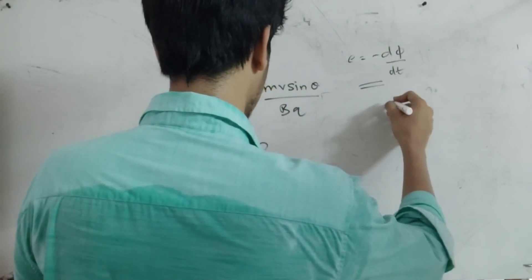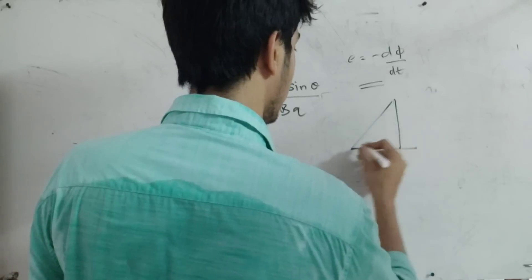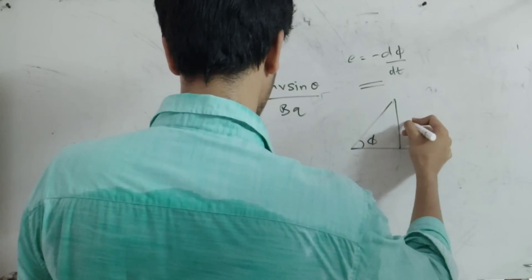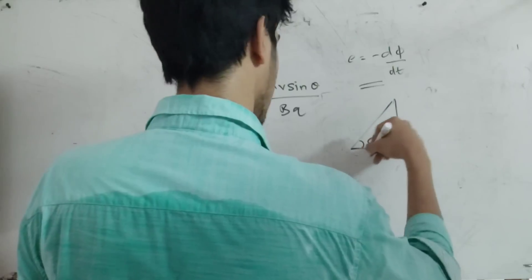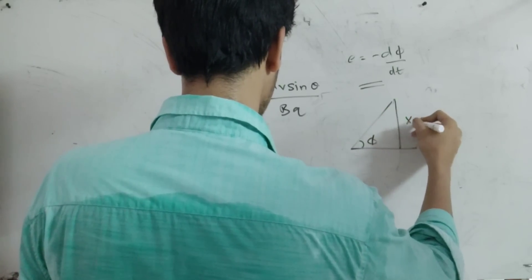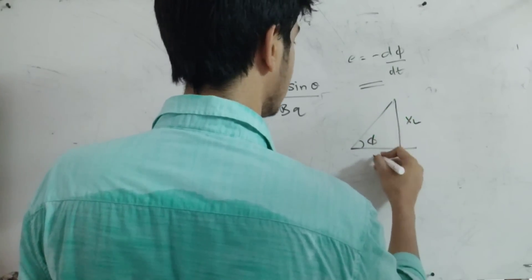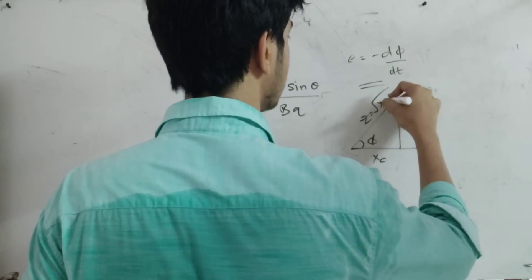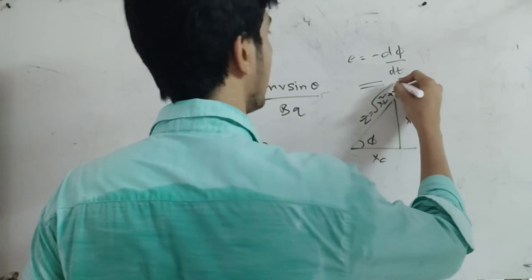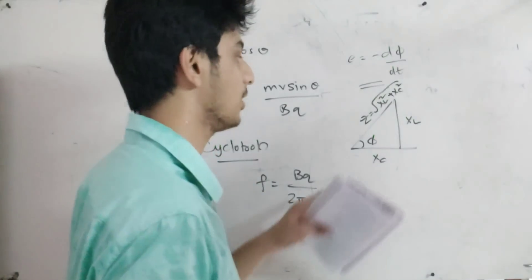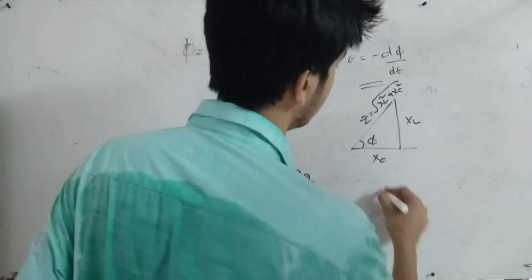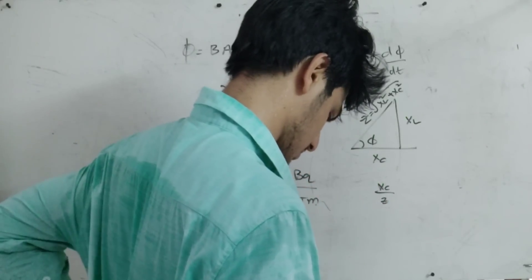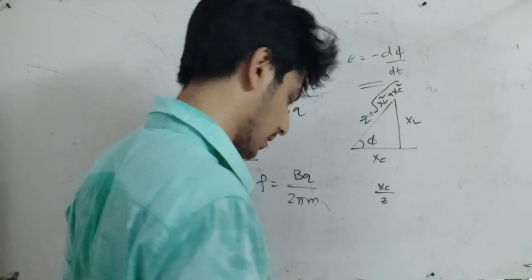Now I am going to draw a triangle here. This triangle has phi. This length is XL, this length is XC, and this is Z — the impedance. Z is root of XL squared plus XC squared. Cos phi is XC divided by Z.